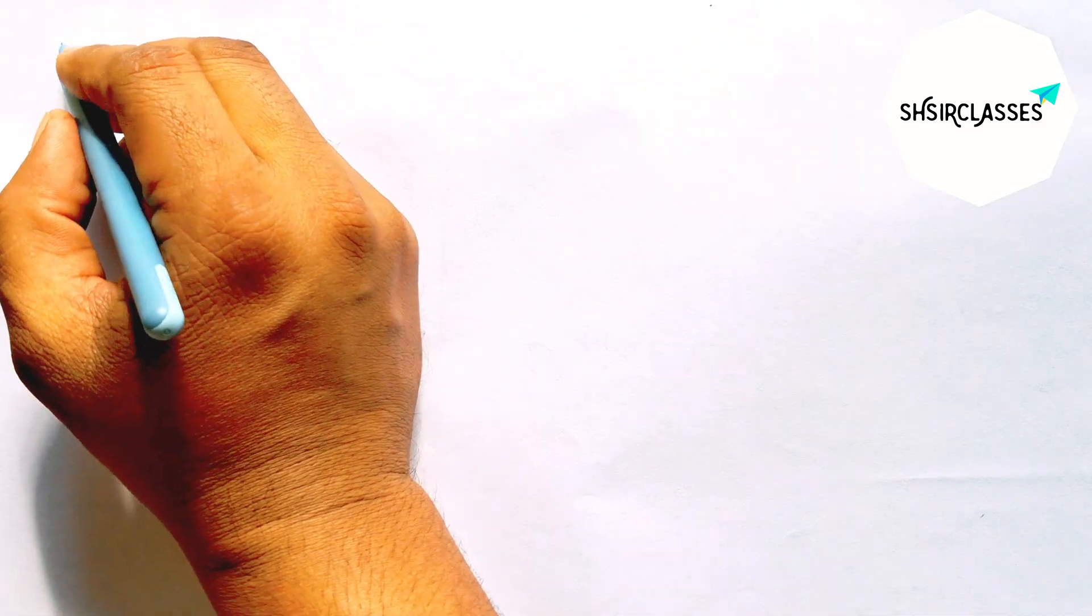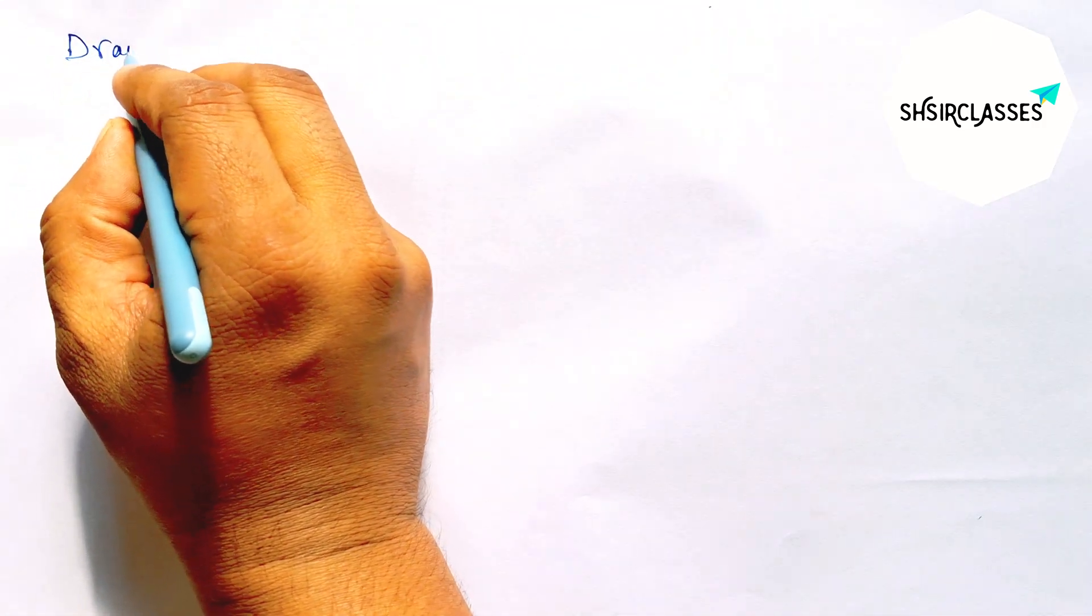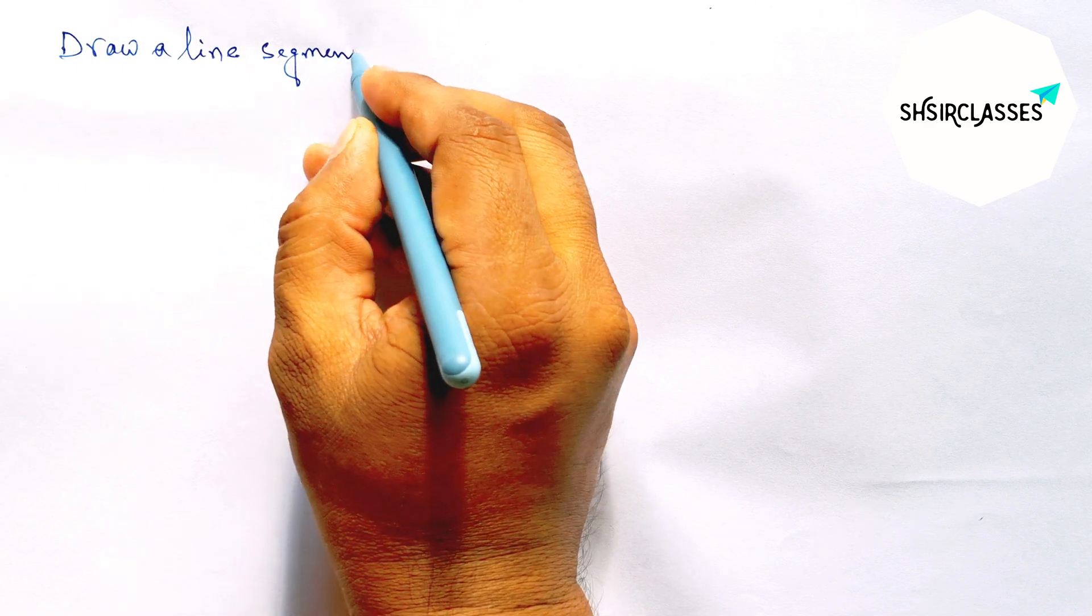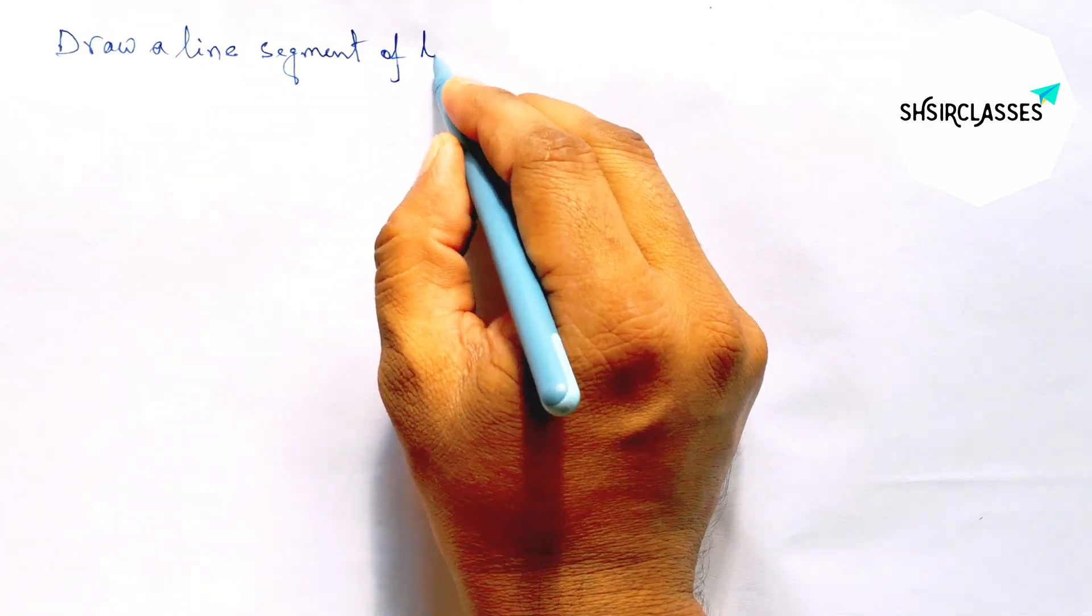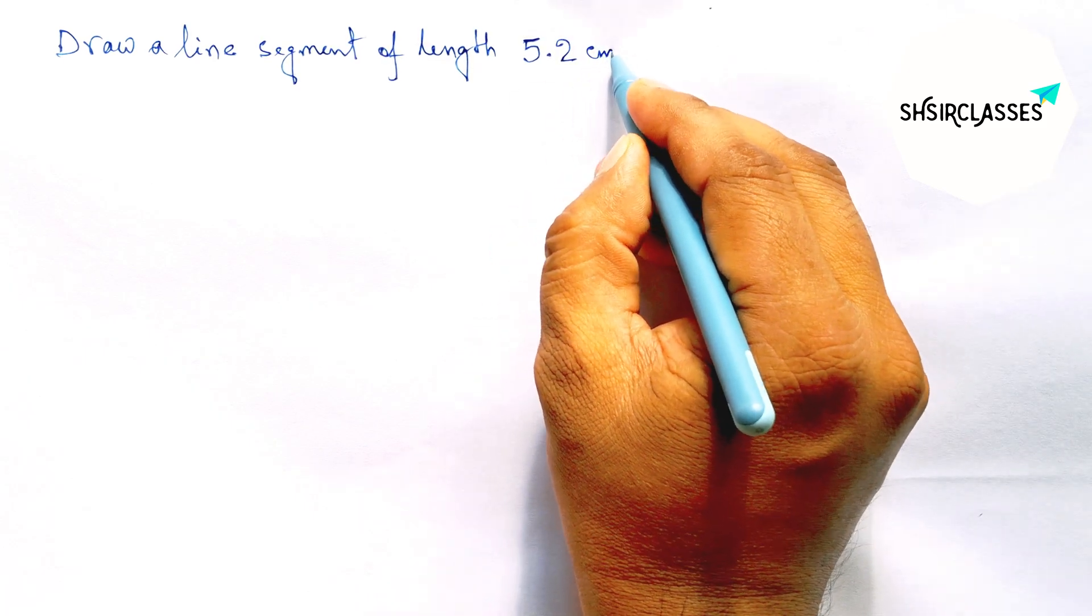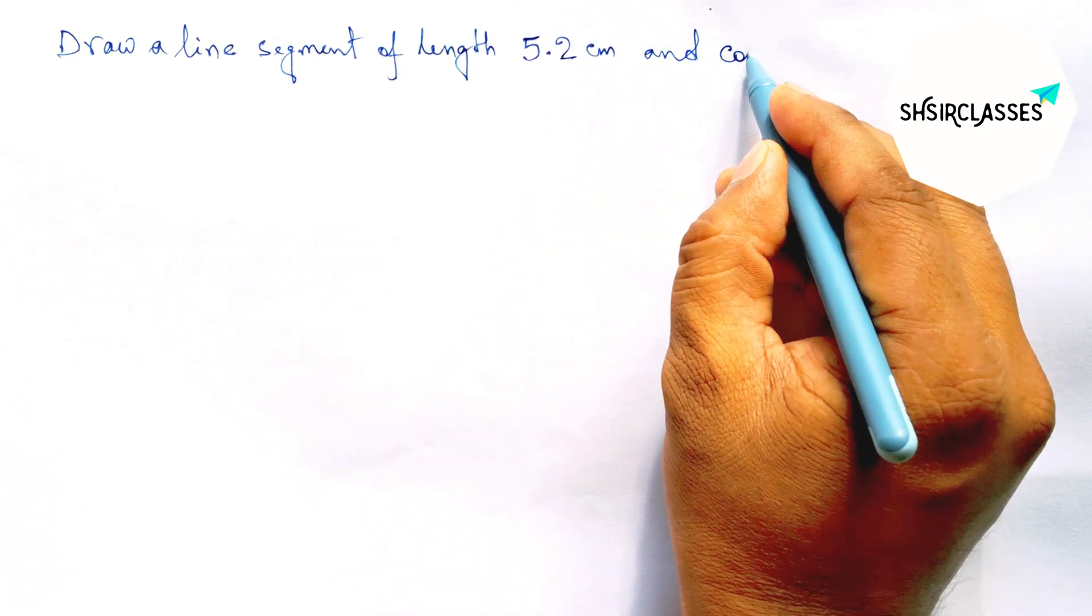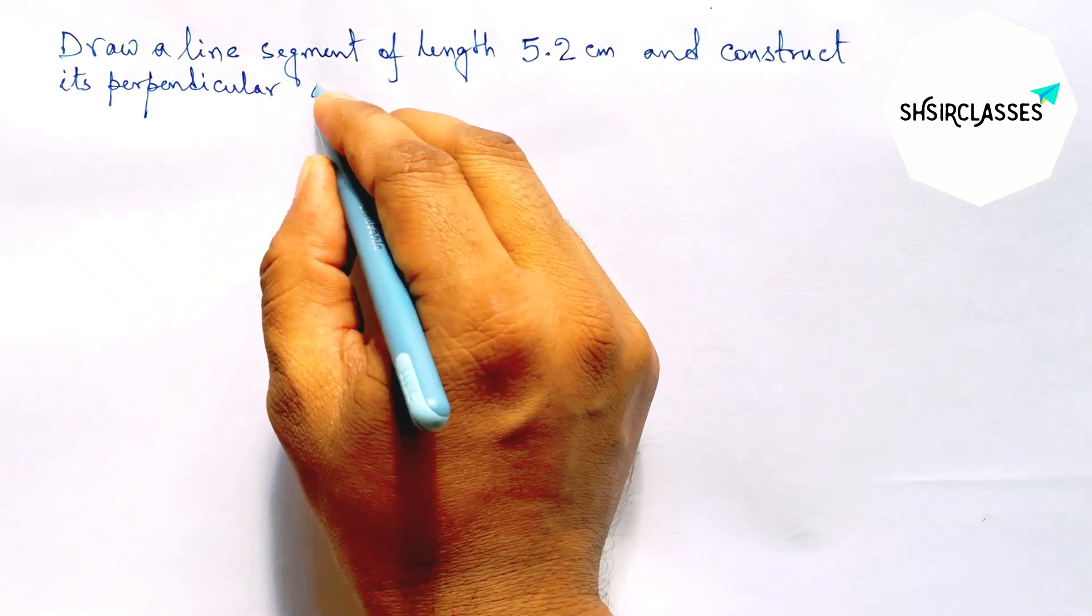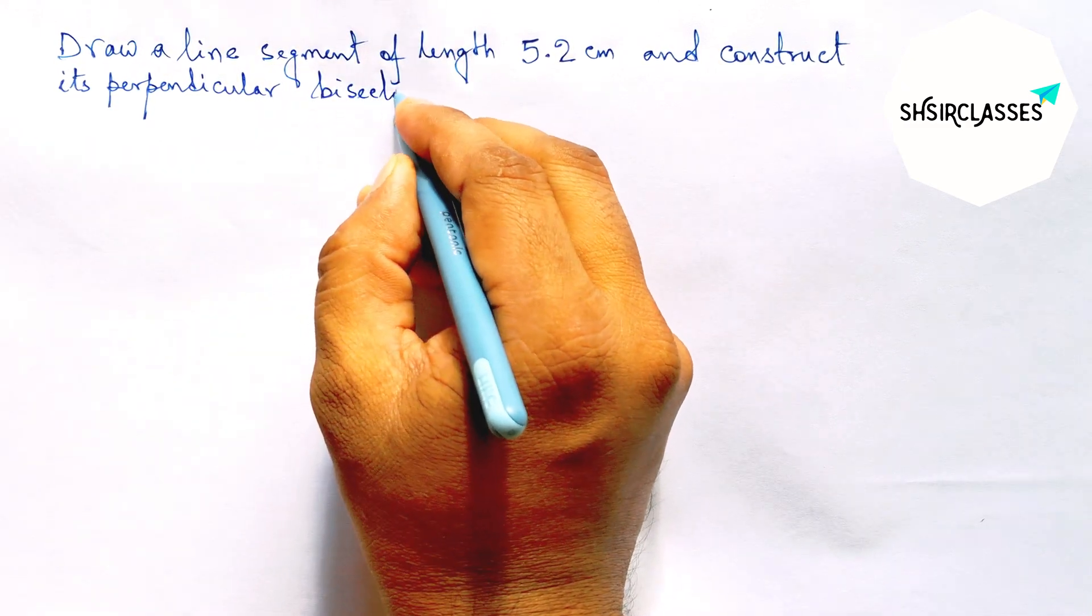Hi everyone, welcome to Shashir Classes. Today in this video, draw a line segment of length 5.2 centimeters and construct its perpendicular bisector to the line in an easy way. So please watch the video till the end. Let's start the video.